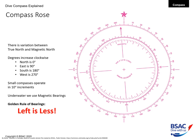We also have a golden rule: left is less. When you see the numbers decreasing in value, that means you're going to your left, and when the compass numbers are increasing, it means you're going to your right.